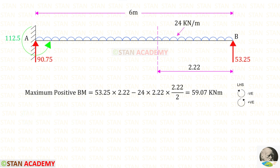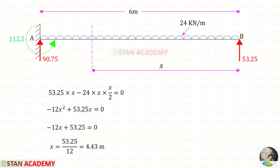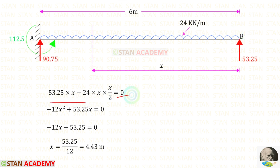For the maximum positive bending moment, we get 59.07. Here you can see the bending moment diagram. At a certain point, the bending moment becomes zero — this is the point of contraflexure. We make a section at a distance x from point B, and since the bending moment is zero there, we can find x using that concept.